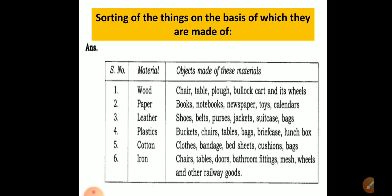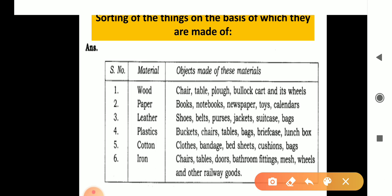Now, sorting of materials on the basis of what they are made of. In this table you can see some materials and the objects made up of them. Wood: chair, table, floor, bullock carts, and wheels. Paper: books, notebooks, newspapers, sometimes toys, and calendars.